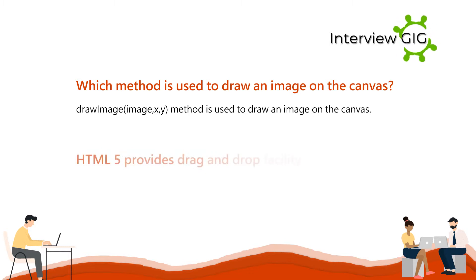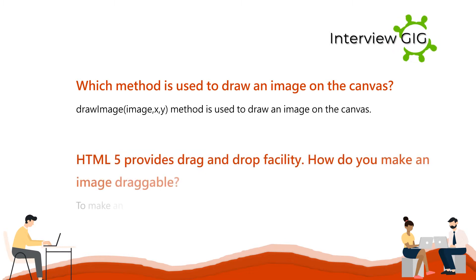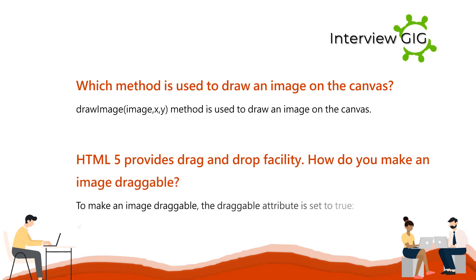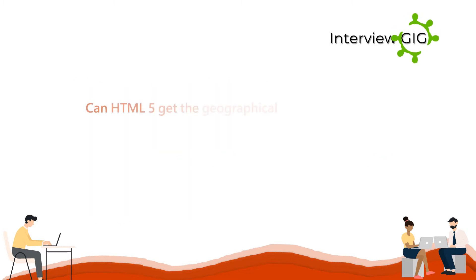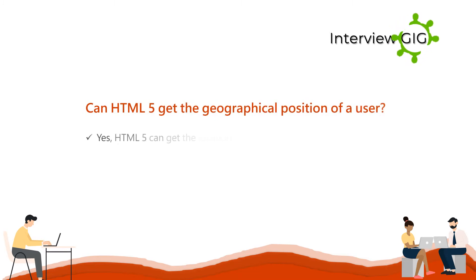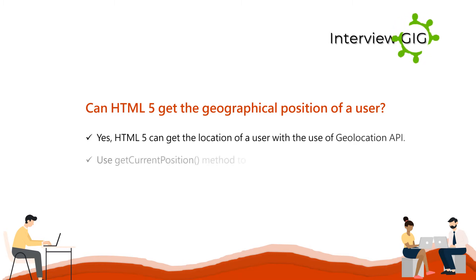HTML5 provides a drag and drop facility. How do you make an image draggable? To make an image draggable, the draggable attribute is set to true: img draggable equals true. Can HTML5 get the geographical position of a user? Yes, HTML5 can get the location of a user with the use of the Geolocation API. Use the getCurrentPosition method to get the user's current position.